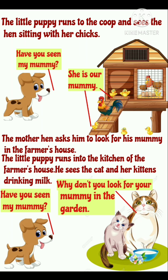The little puppy runs into the kitchen of the farmer's house. अब वो little puppy farmer के घर की kitchen की तरफ दौड़ता है. He sees the cat and her kittens drinking milk. वहाँ पर वो cat और kittens को दूध पीते हुए देखता है. फिर से वो वही question पूछता है — Have you seen my mommy? Cat बोलती है — Why don't you look for your mommy in the garden?